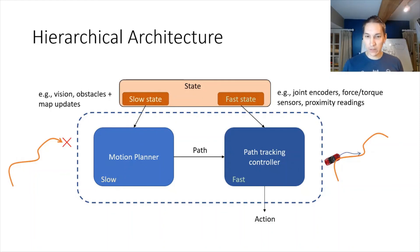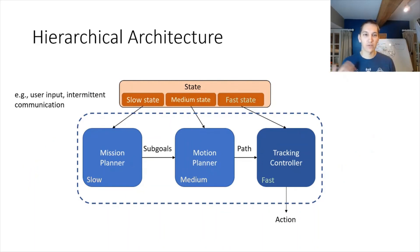We can also have multiple levels of hierarchy. If you have especially slow states, such as user inputs or intermittent communication, these can go into very high-level mission-level planners. These then can provide sub-goals which go into the motion planner, and then the rest of that medium to fast set of levels of the hierarchy can then operate on those sub-goals.